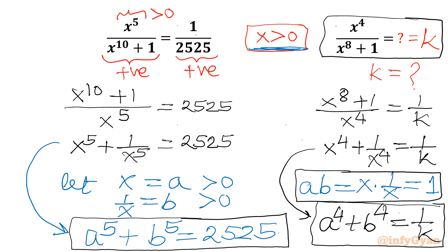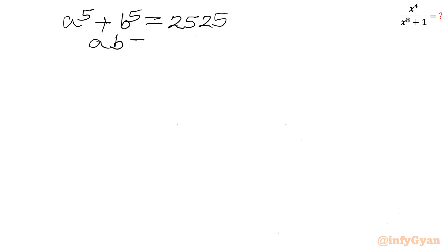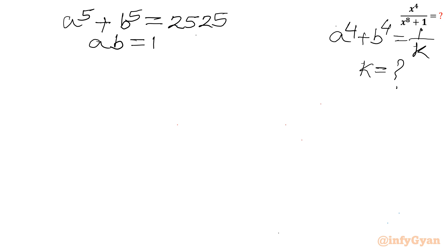Let us solve. We have a⁵ + b⁵ = 2525, ab = 1, and the target expression is a⁴ + b⁴ = 1/k. Now let us assume a + b = u. Since a and b are both positive, u must be positive.